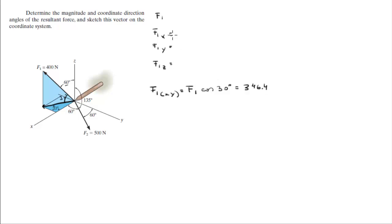Now that we got this projection we can find the X and Y components easily. F1x is equal to the projection times the cosine of 20, this angle right here will give you this vector which is equal to 325.5.